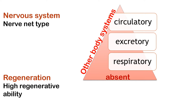Other body systems such as respiratory, excretory, and circulatory systems are completely absent, because all the cells are close enough to the external medium so that respiration and excretion occur directly by diffusion through the cell membrane. Thus diffusion occurs and there is no need for a complex system.